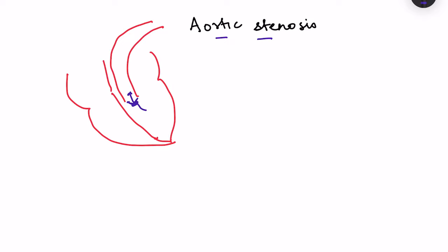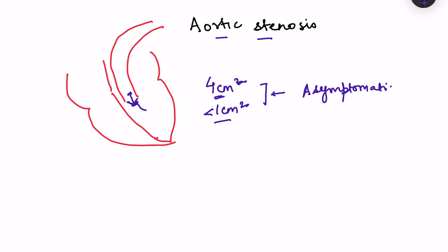The normal aortic valve area upon opening is approximately four centimeters squared. We call it severe aortic stenosis when the area decreases to less than one centimeter squared, because in between this range aortic stenosis is generally asymptomatic, and symptoms only appear in the later stages of the disease.